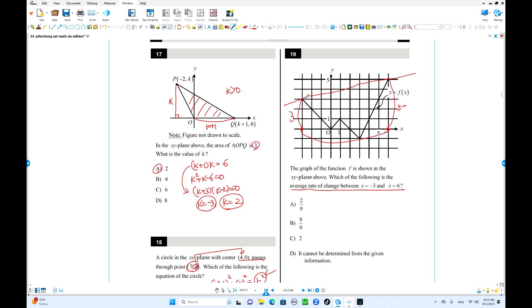Slope of this secant is 5 minus 3 over, what is the change in x? 6 minus negative 3, which is 9. So 2 over 9 is the answer. Average rate of change is actually the slope of the secant. This line is called secant.